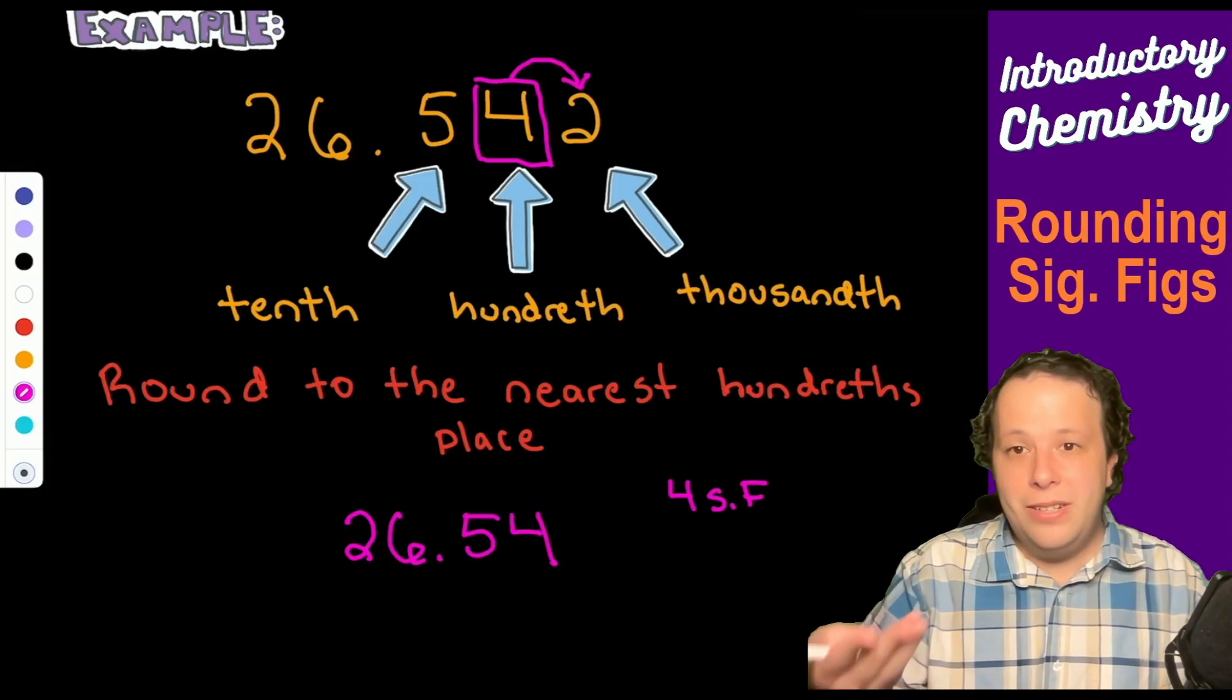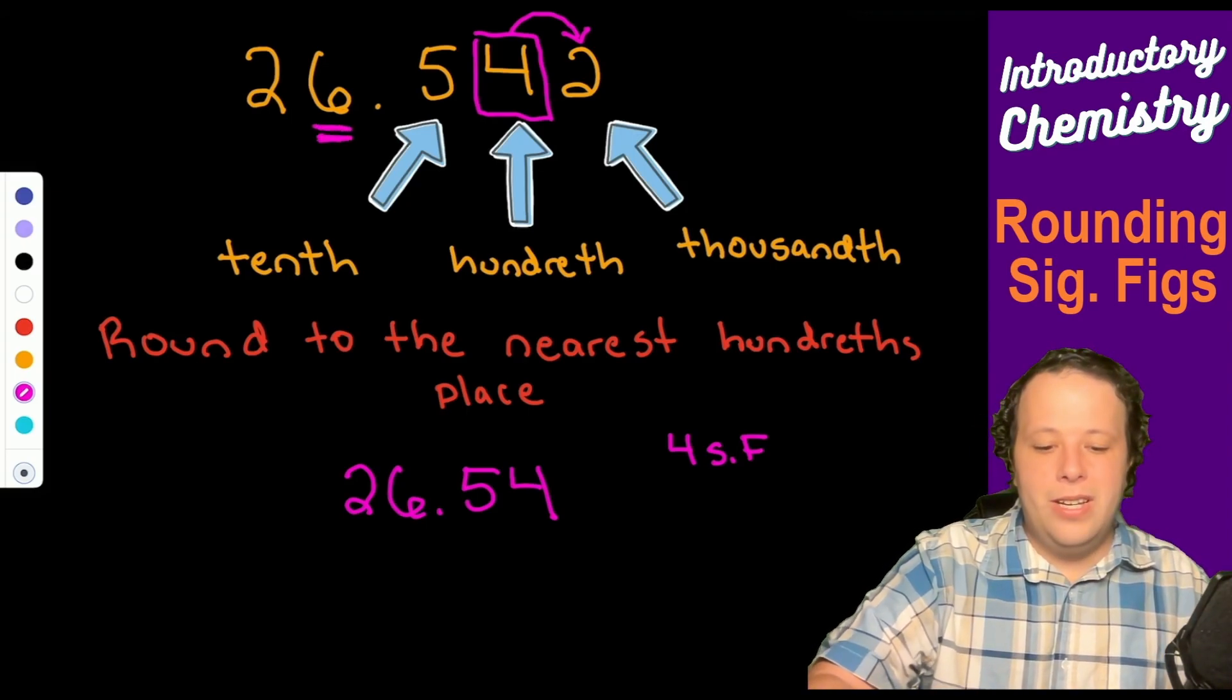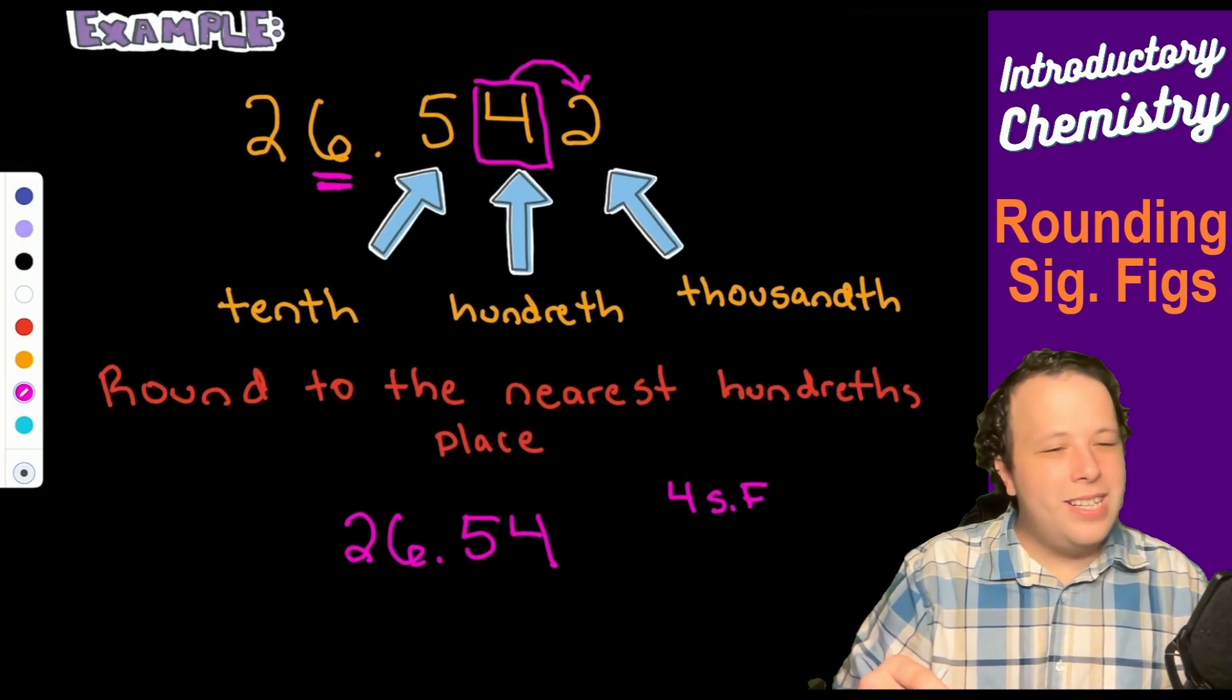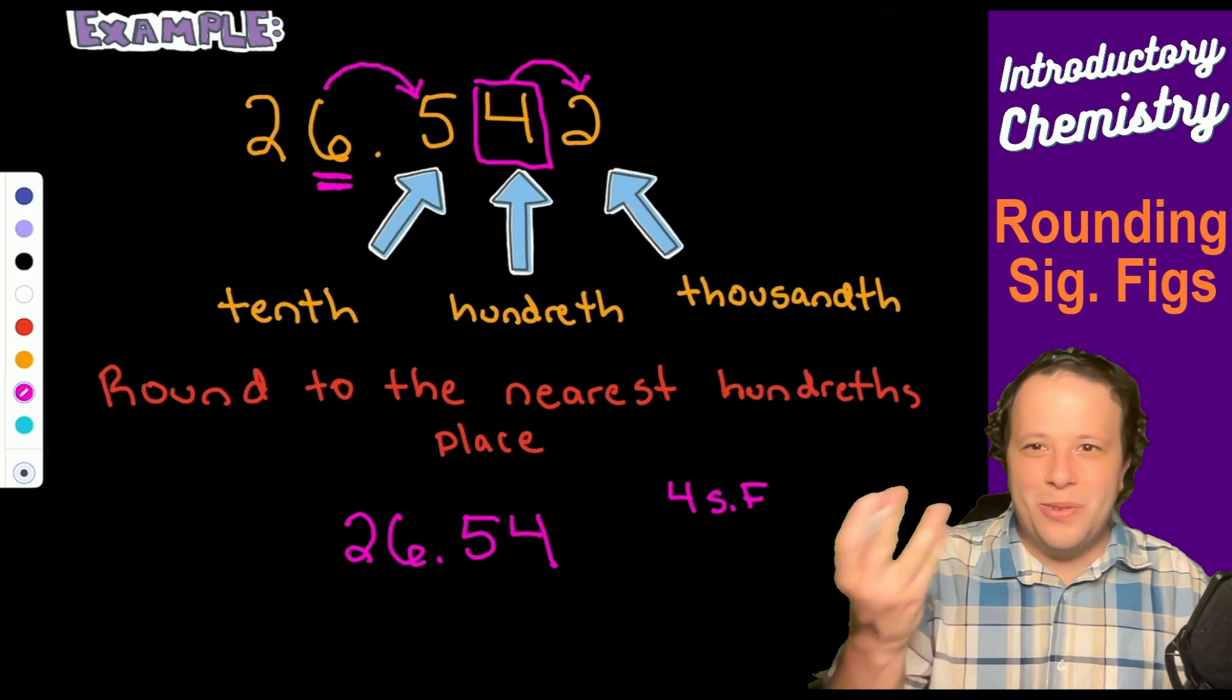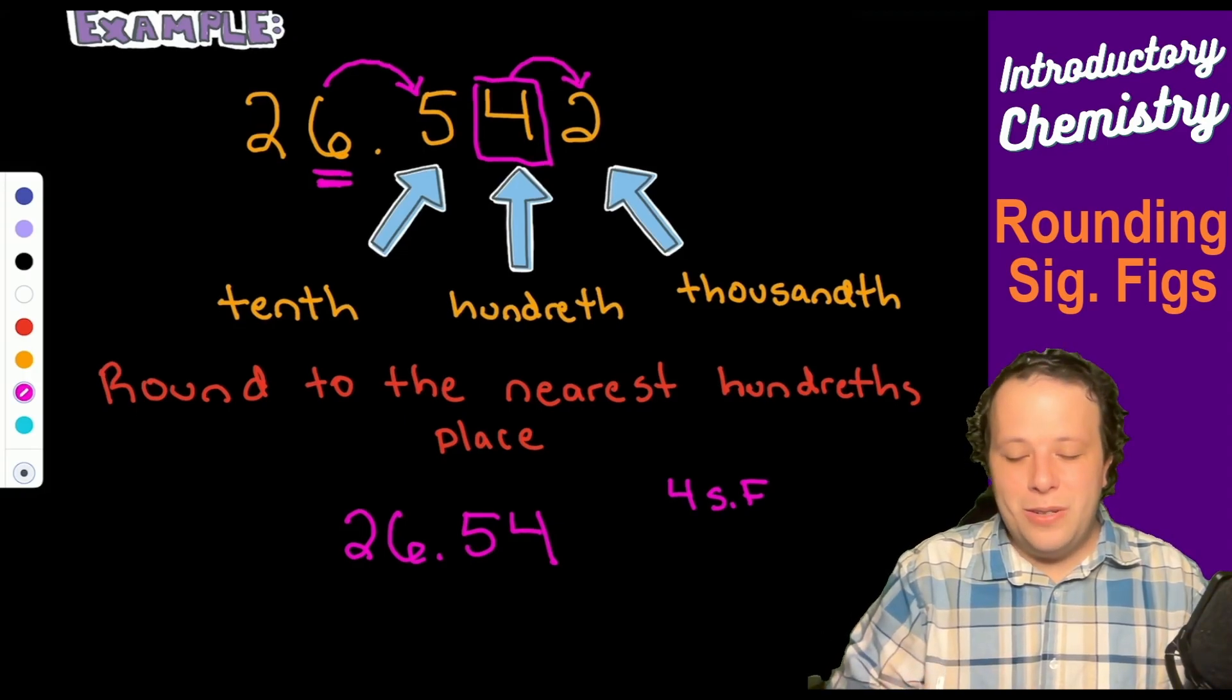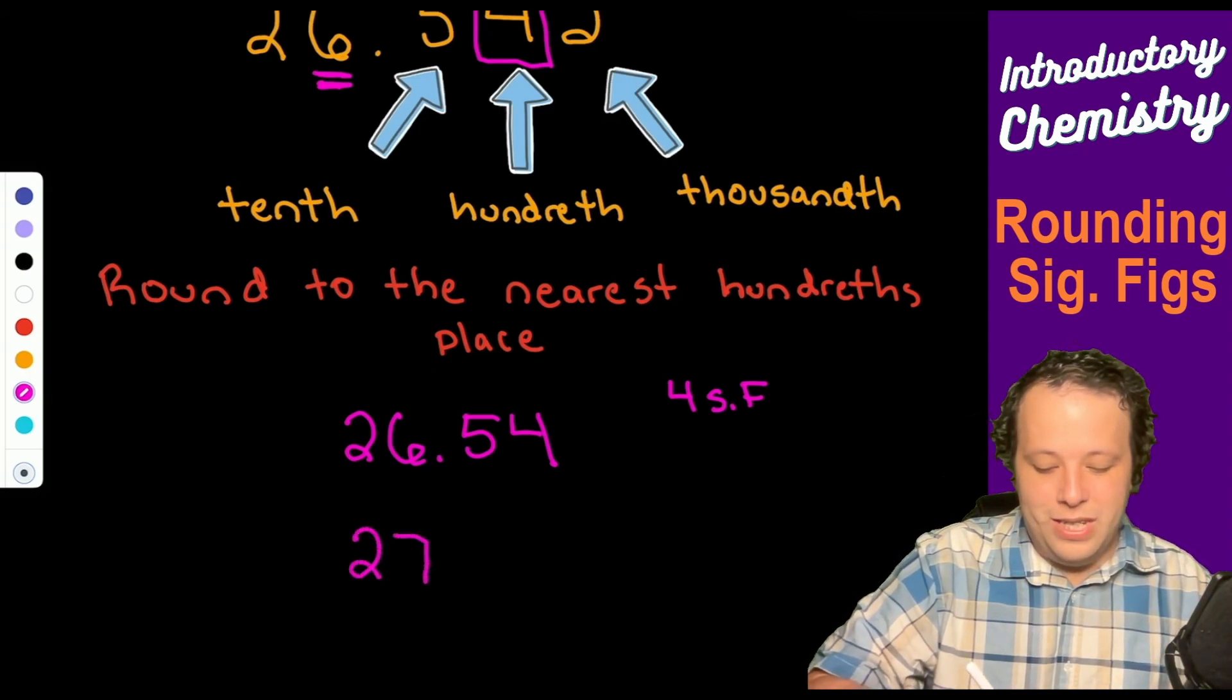What if I asked you to round it to the ones position? You're going to once again look over to the right and you see, oh this is greater than five, so you're going to round up. That six is going to go up and become a seven, so that would make it 27.